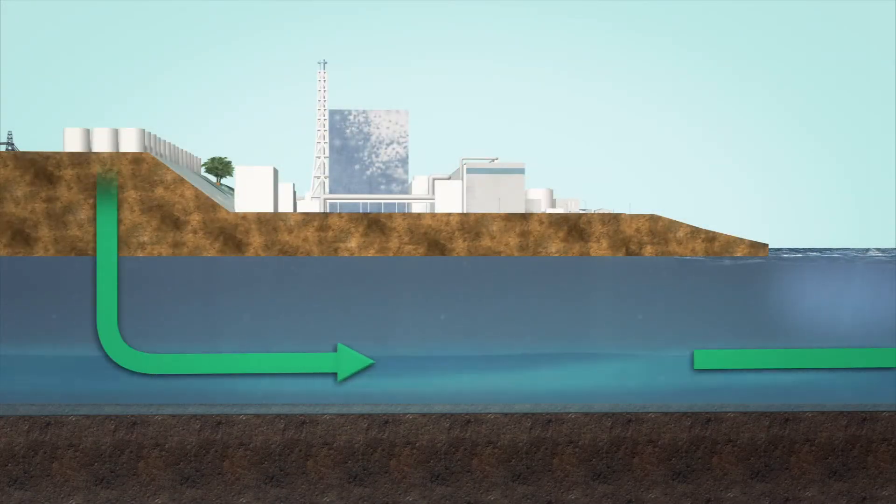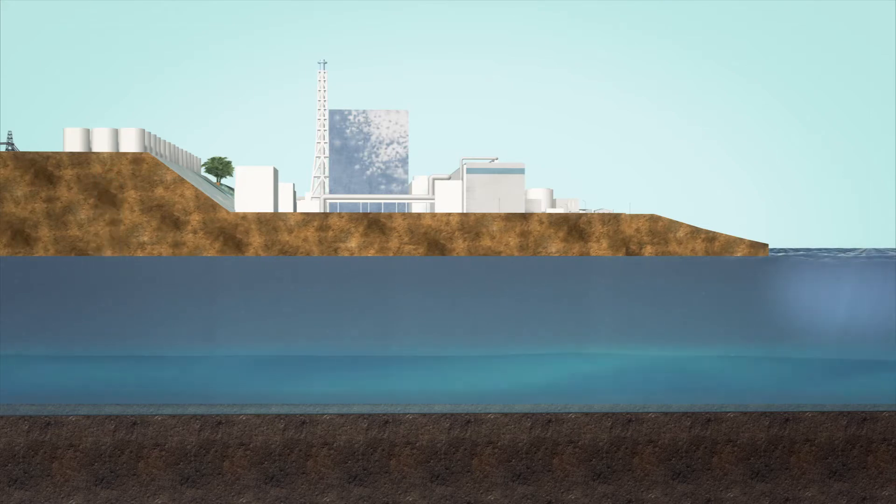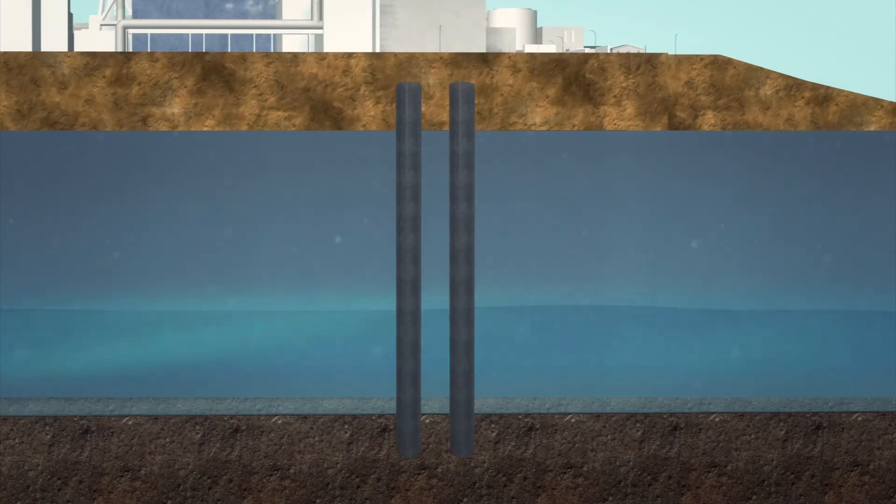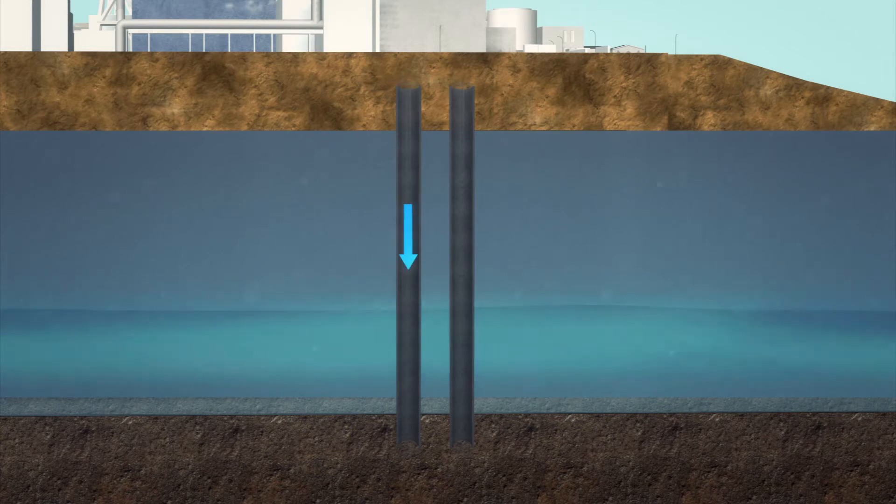Pipes will be drilled roughly 100 feet into the ground around the reactors. Coolant water is pumped into the pipes in order to freeze the surrounding water and soil to minus 40 degrees Celsius.